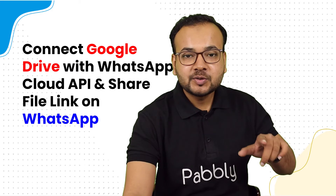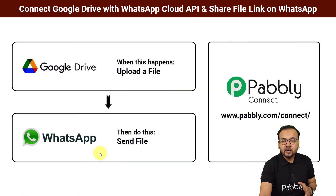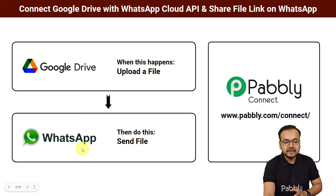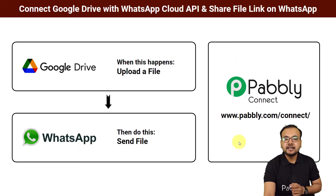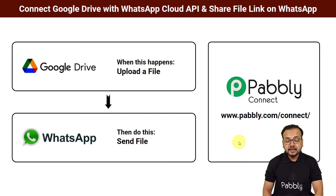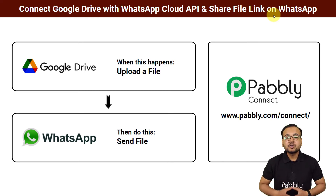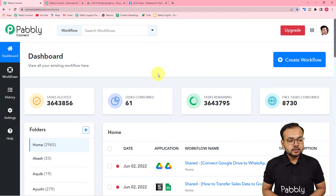Here is how this automation will look: you upload a file on Google Drive and that file's link is delivered to a particular person's WhatsApp account automatically. To make this happen we are using Pably Connect, which is an integration and automation tool. The best part is anyone can set up this automation without any coding skills or programming knowledge.